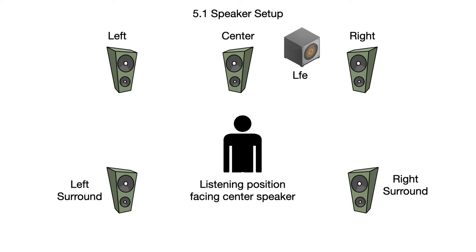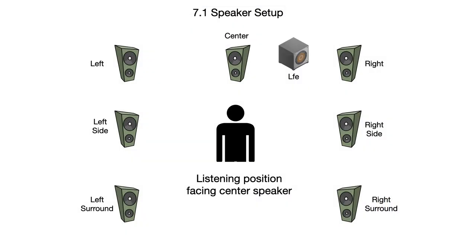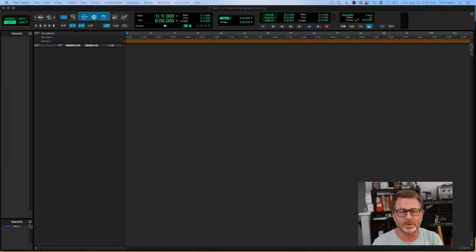The same thing applies for a 7.1 — that's just two more speakers, eight total. 7.1 would be left, center, right, two side speakers, and then two surround speakers that make up the seven speakers, and then the .1 of course is the LFE again.